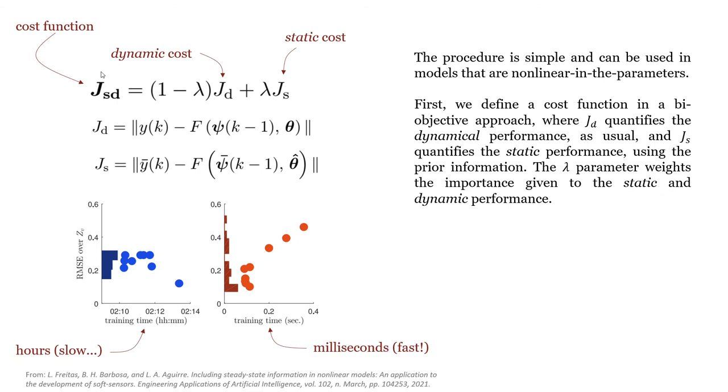The procedure is simple and can be used in models that are nonlinear in the parameters. First, we define a cost function in a bi-objective approach, where J_d quantifies the dynamical performance as usual, and J_s quantifies the static performance using the prior information. The lambda parameter weights the importance given to the static and dynamic performance.